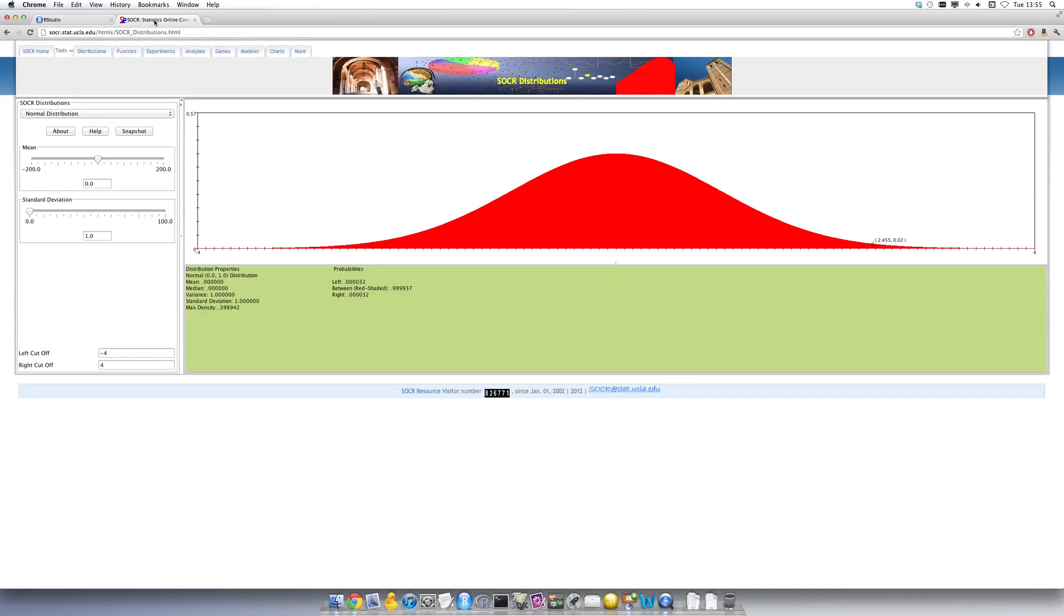Another option, instead of using statistical software, I can actually use a web applet designed especially for finding normal probabilities. All I need to do is from the drop down menu, pick the normal distribution, specify my mean of 45 and specify my standard deviation of 3.2.